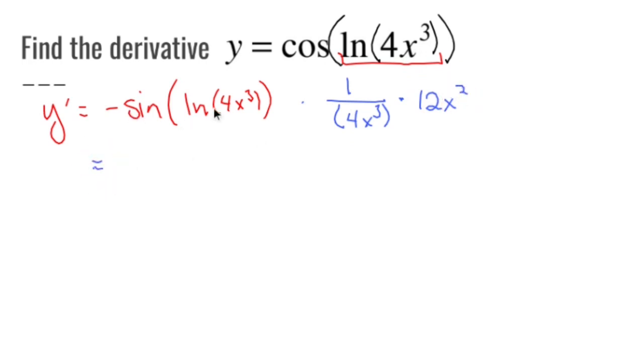So not much changes over here. It's just not pretty. Negative sine of ln of 4x cubed. That's a cubed. This guy over here becomes 12x squared over 4x to the third, which simplifies to 12 over 4 is 3. X squared over x cubed is x. So I could put this all together.